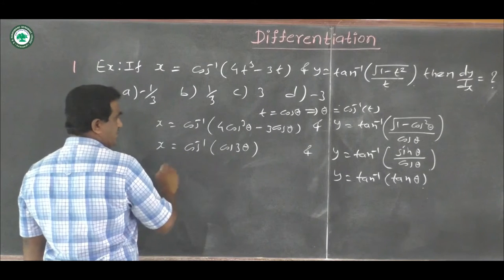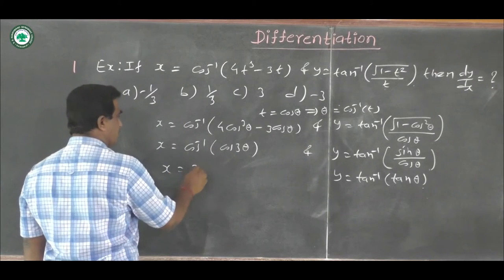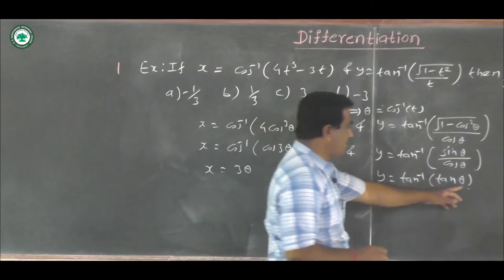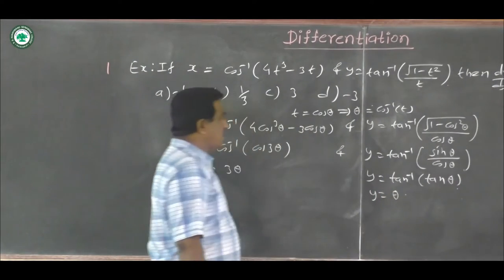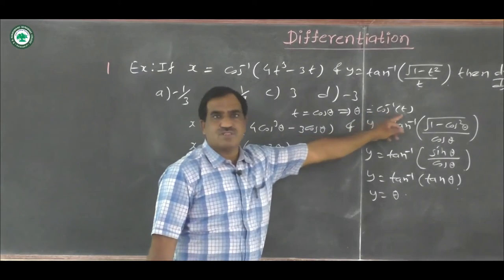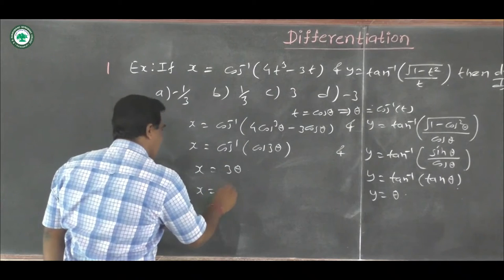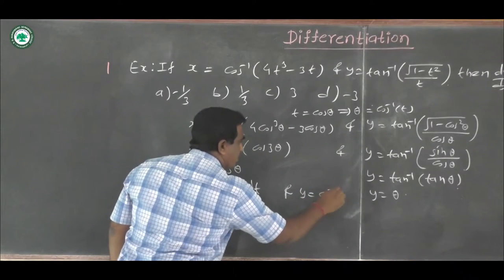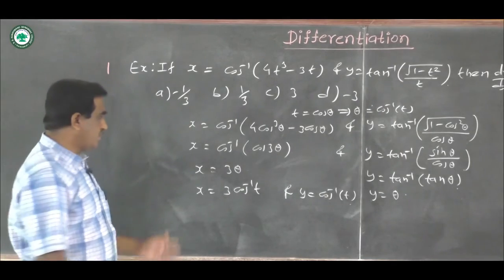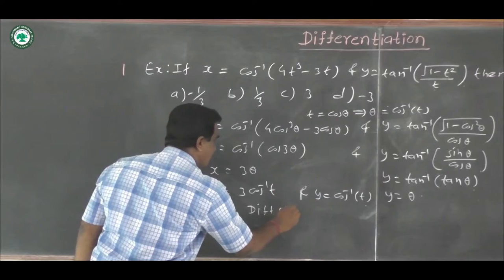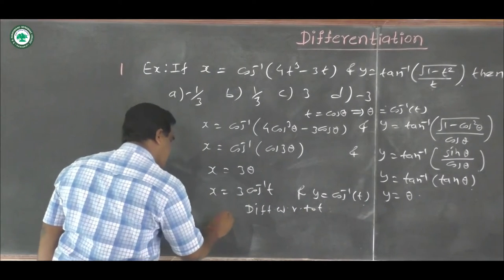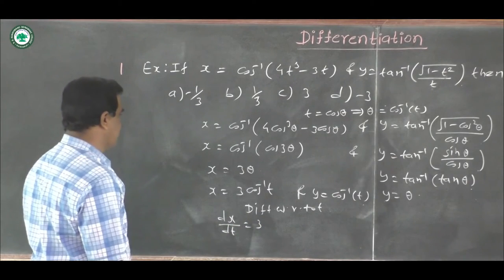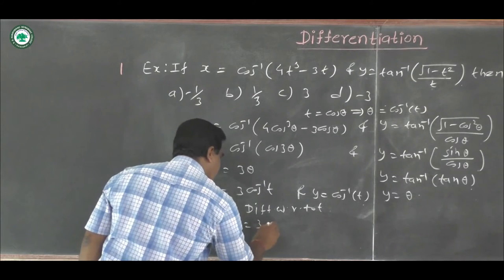Applying inverse trig formulas: cos inverse of cos 3θ equals 3θ, and tan inverse of tanθ equals θ. So x equals 3θ and y equals θ. Since θ equals cos inverse of t, we have x equal to 3·cos inverse of t and y equal to cos inverse of t.